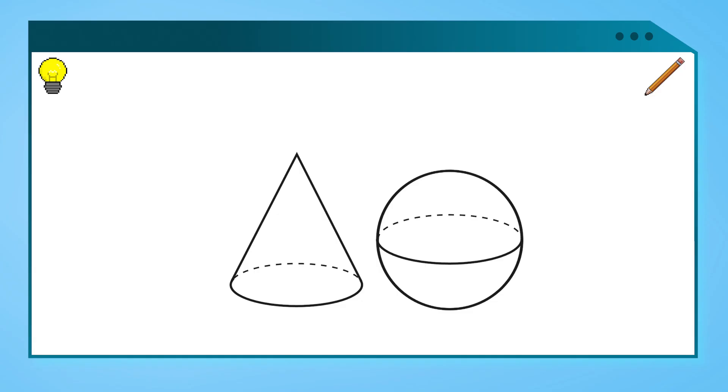Only two shapes left. Let's check the last question. Which of these shapes has one vertex?